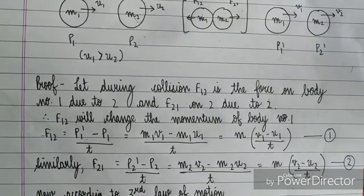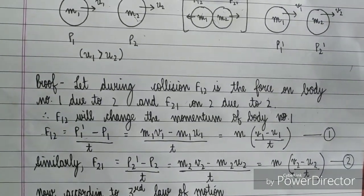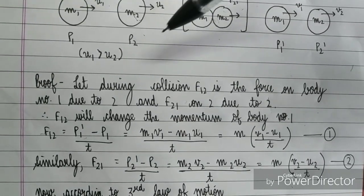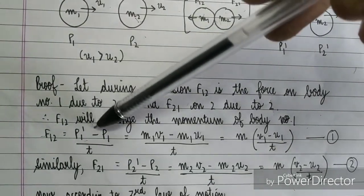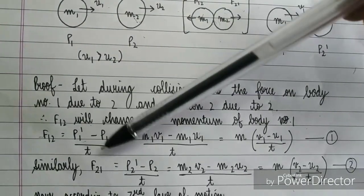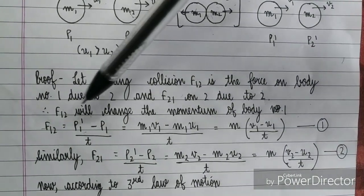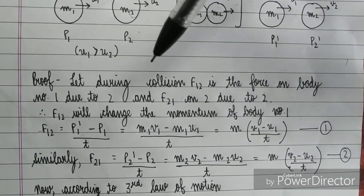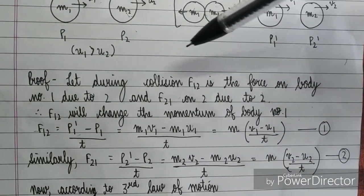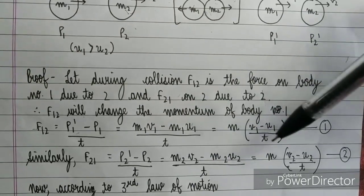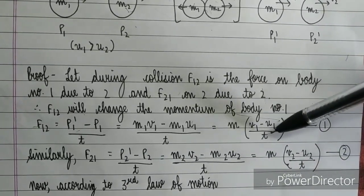Then, the force on body with mass M1, which is F12, will obviously change its momentum. Force is equal to change in momentum upon time taken. So F12, what is the momentum? Final momentum minus initial momentum upon time taken. So here, our final momentum is P1 dash minus initial momentum is P1 upon time. Now momentum, we know, M1 V1 minus M1 U1 upon time. So here, we have taken M1 common. We have V1 minus U1 upon T. This is our first equation.